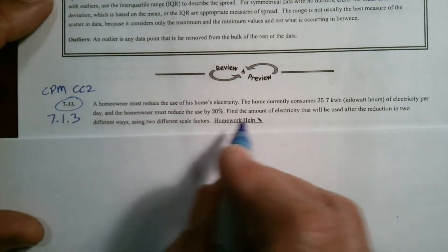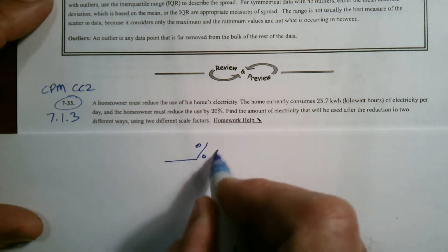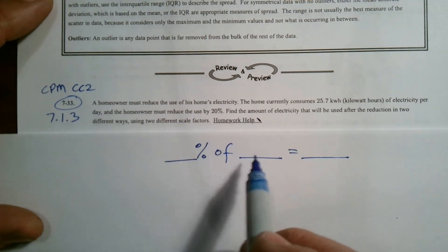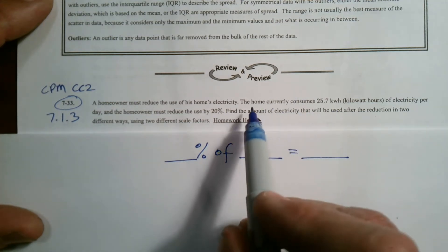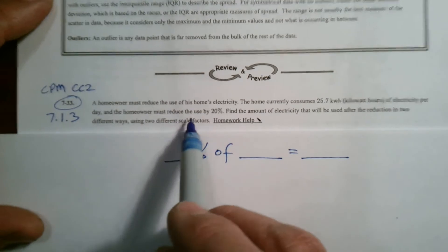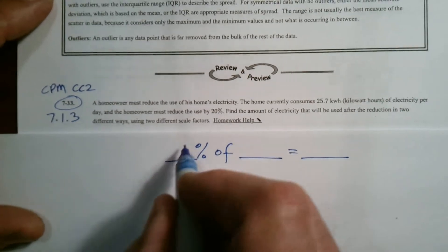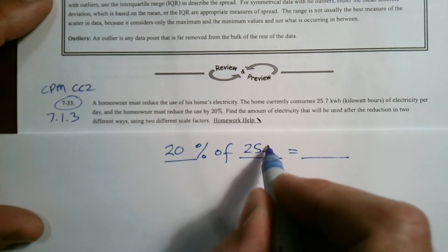I've always said every percent problem can be solved by remembering one equation where you have some percent of something is always equal to something. In most word problems we have at least two of these that we're trying to find the third. Right now we know that the home consumes 25.7 kilowatt hours and the homeowner must reduce that by 20%. So I want to find what is that reduction. I'm going to say what is 20% of 25.7.